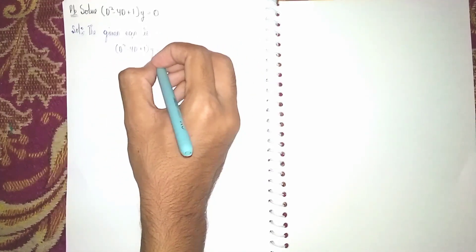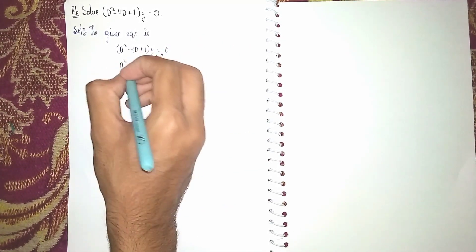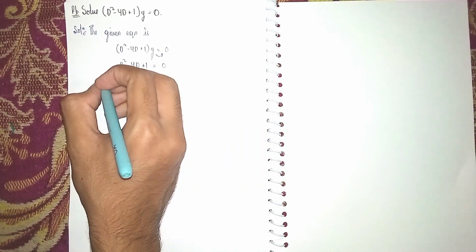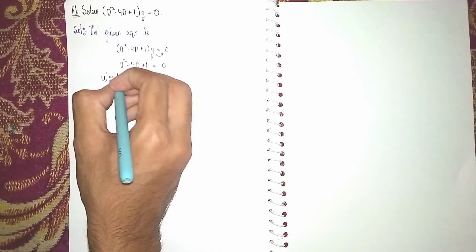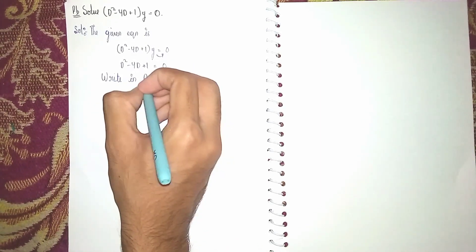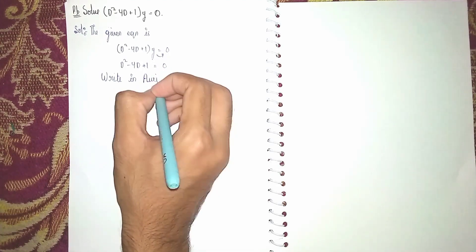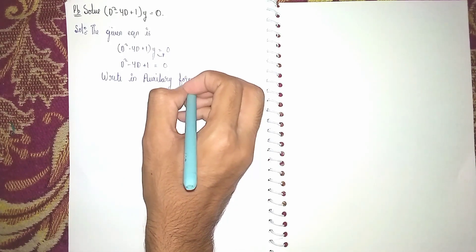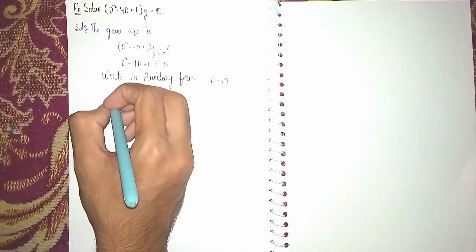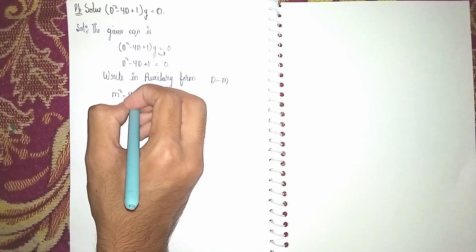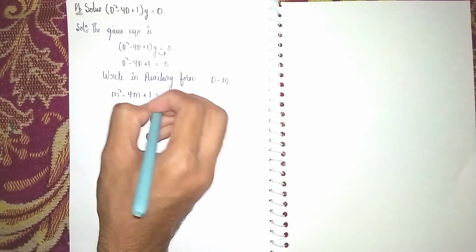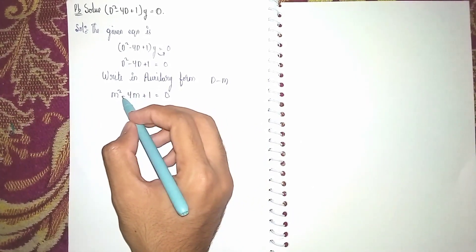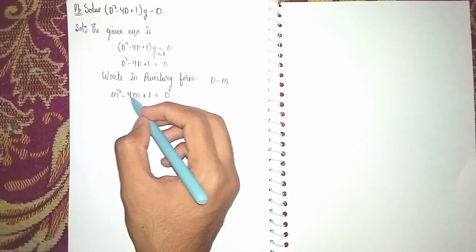Setting y to zero, the equation becomes D² - 4D + 1 = 0. Now I am writing the auxiliary form. I write the auxiliary form to find the roots. In the auxiliary form, instead of D we put m, so it becomes m² - 4m + 1 = 0. Now we have to find the roots, but I cannot find the factors by middle term splitting.